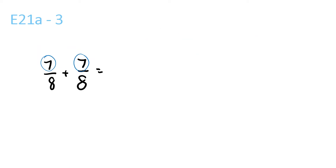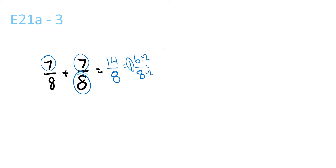7 plus 7 plus 7 is 14, over 8. 8 goes into 14 once with a remainder of 6. You can do 6 divided by 2, and 8 divided by 2. Bring the 1 over: 6 divided by 2 is 3, 8 divided by 2 is 4. So that's 1 and 3 over 4.